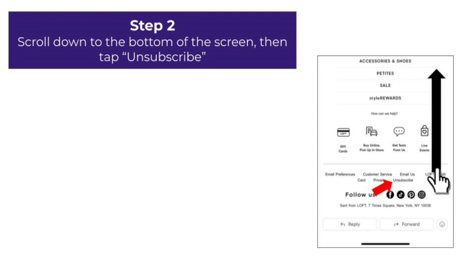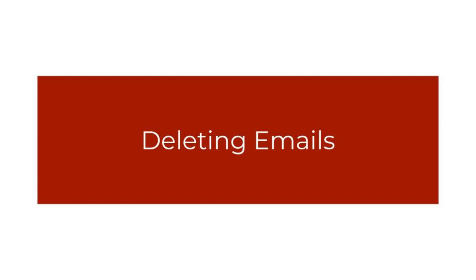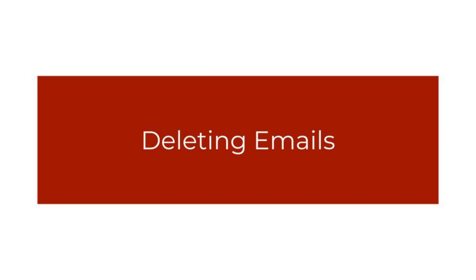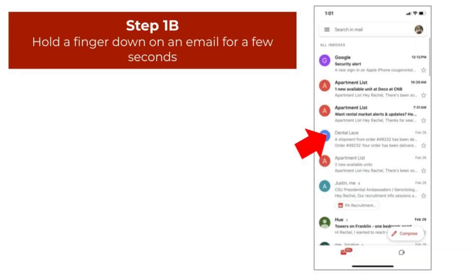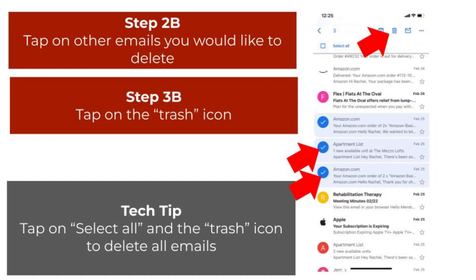Next, we will discuss how to delete an email on the Gmail app. There are two methods for deleting emails. To delete a single email, tap on the email you would like to delete, then tap on the trash icon located at the top right corner to delete the email. If you want to delete multiple emails, hold down a finger on an email for a few seconds until it turns blue. Once you see a check mark next to the email, you can start to tap other emails you would like to delete. Since we want to delete all the emails with a check mark, tap on the trash icon at the top right corner. If you would like to delete all your emails, tap on the box next to Select All, then tap the trash icon.